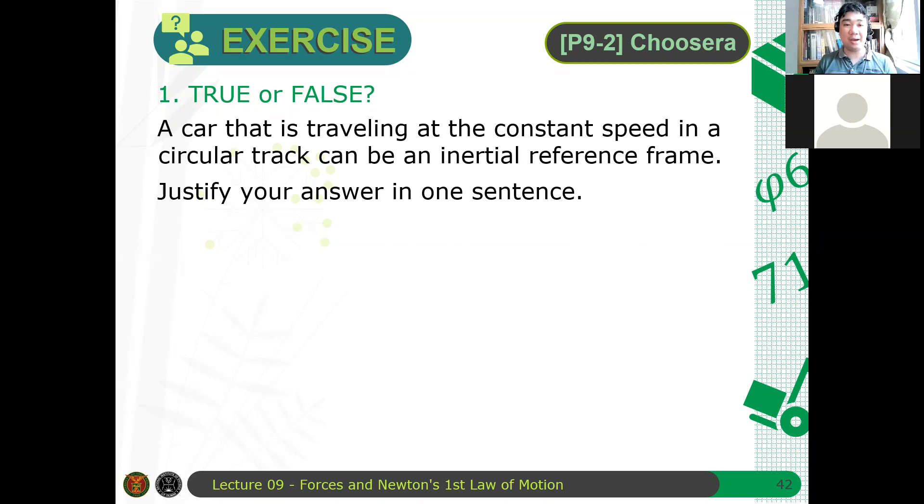So again, a car that is traveling at constant speed in a circular track can be an inertial reference frame. Is it true or false? And why? Okay, then second question.